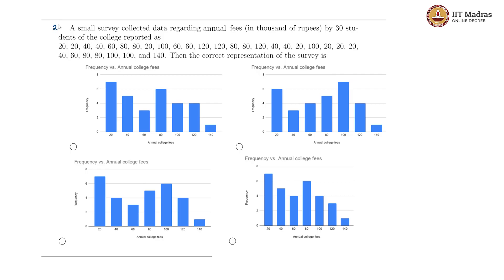This is our second question. This is about a small survey about the data regarding annual fees by some 30 students in thousands of rupees. So this will be 20,000 rupees, this will be 40,000 rupees, and this would be 1 lakh. Anyway, we are being asked about the correct representation of the survey. There are 4 bar graphs given. We just need to check the counts and which bar graph is representing it properly.